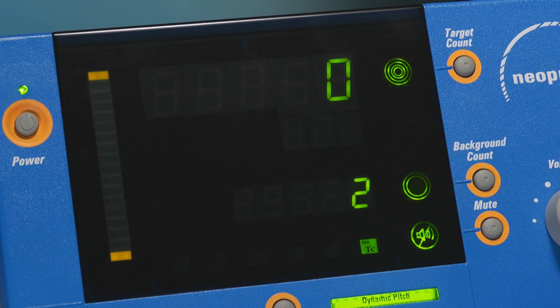Version 6.01 software adds dual isotope radionuclide selection mode and dynamic pitch only.